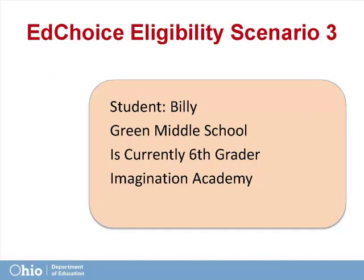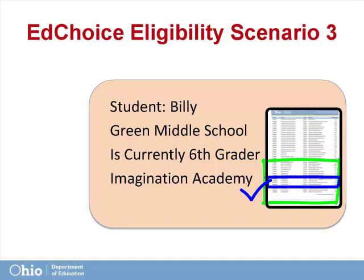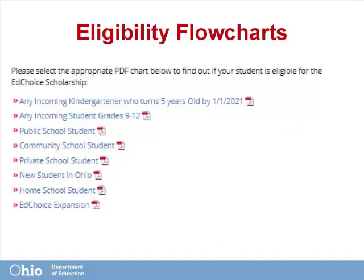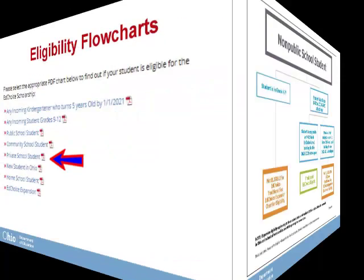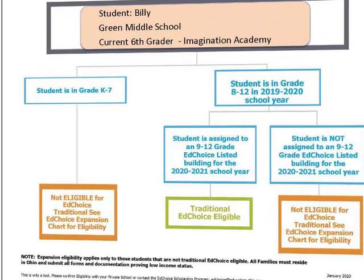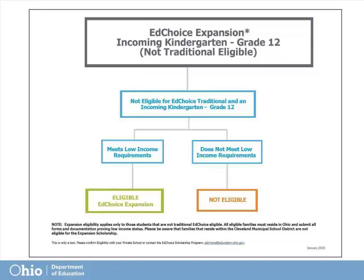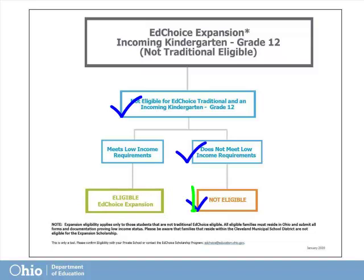Now let's consider Ann's older brother Billy. He is currently in the 6th grade attending Imagination Academy, a private school. We know that Billy's public school assignment for both this year and next year would be Green Middle School. Would Billy be eligible using the same process as his sister? No. Billy is a private school student, so we must use the private school flowchart. We verify that Billy is a kindergarten through 7th grader and not traditional EdChoice eligible. Next, we go to the expansion chart, verify he is not traditional EdChoice eligible, and if Billy's family meets low income guidelines, we would enter an application in the expansion system. If not, Billy would not be eligible for an EdChoice scholarship.